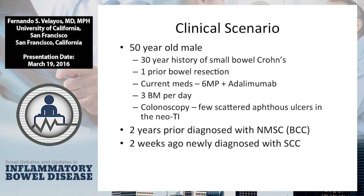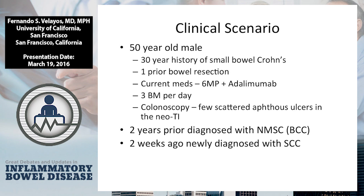Here's a clinical scenario — a real patient. A 50-year-old male with a 30-year history of small bowel Crohn's with one prior resection is currently on 6MP and an anti-TNF, seems reasonably controlled. Colonoscopy shows a few scattered aphthous ulcers at the neoterminal ileum, called an I1. Two years ago he was diagnosed with a non-melanoma skin cancer — a basal cell — and two weeks ago was diagnosed with a squamous cell cancer. The key questions are: did his therapy cause his cancer, what should be done with that therapy, and is there any way to prevent this type of cancer?